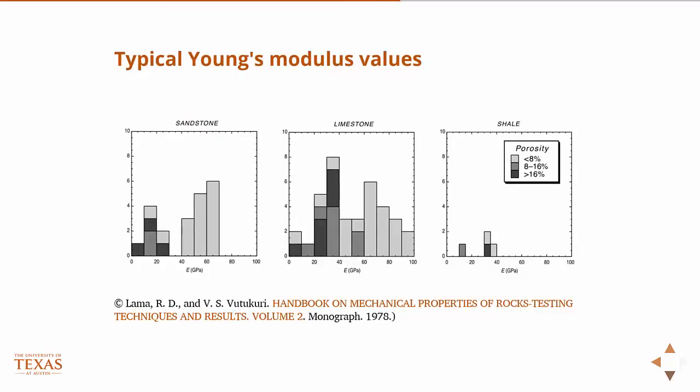So here's a couple of typical Young's modulus values in gigapascals. So that's 10 to the ninth pascals. For a couple of different types of rock. These are histograms. So this come from a handbook where they measure multiple types of sandstone, limestone, and shale at varying porosities. And they measure the Young's modulus and they produce these histograms.